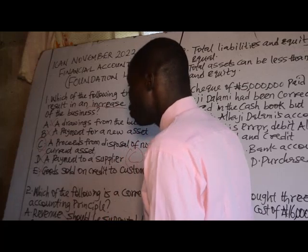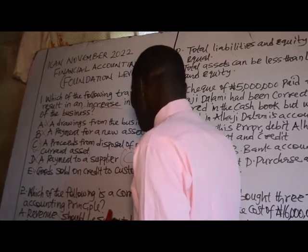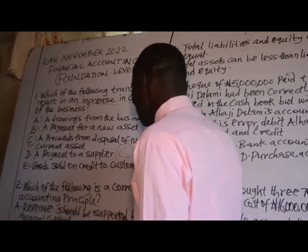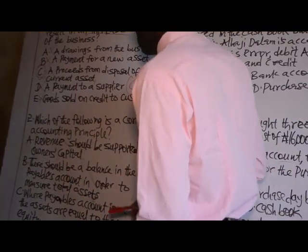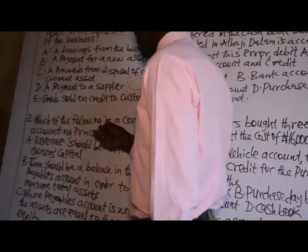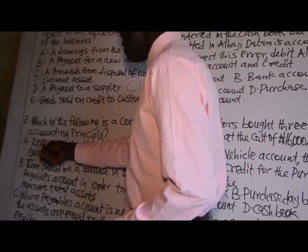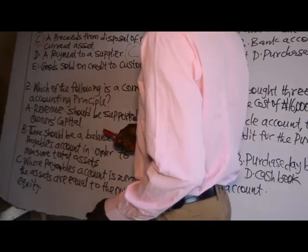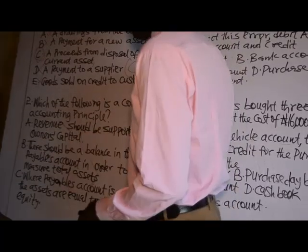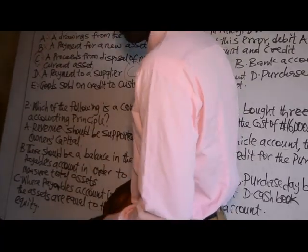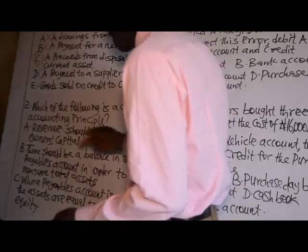Number two: which of the following is a correct accounting principle? Option A: revenue should be supported by owner's capital. There is no correlation between revenue and owner's capital, so the answer cannot be A.